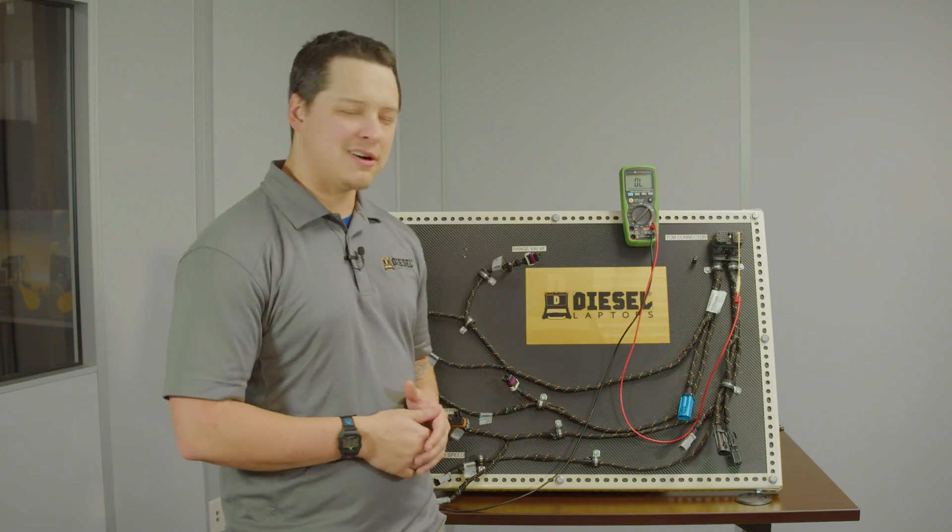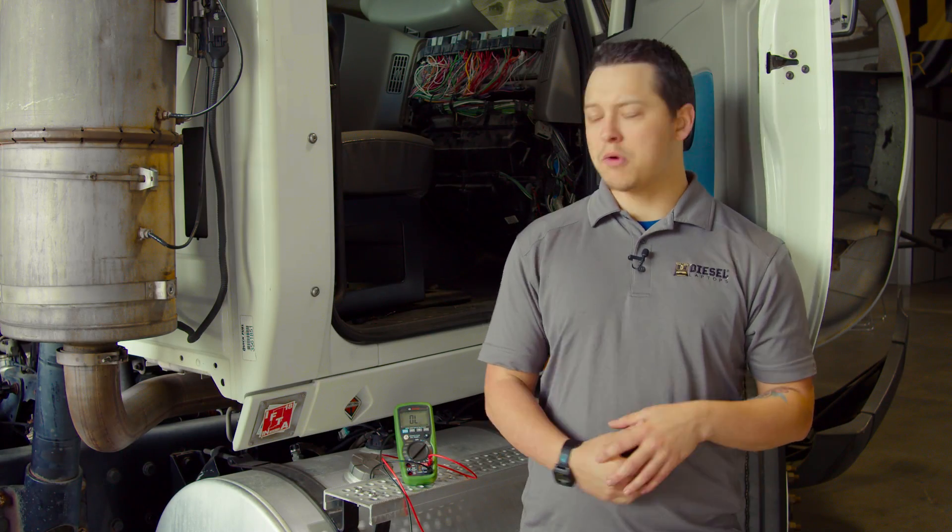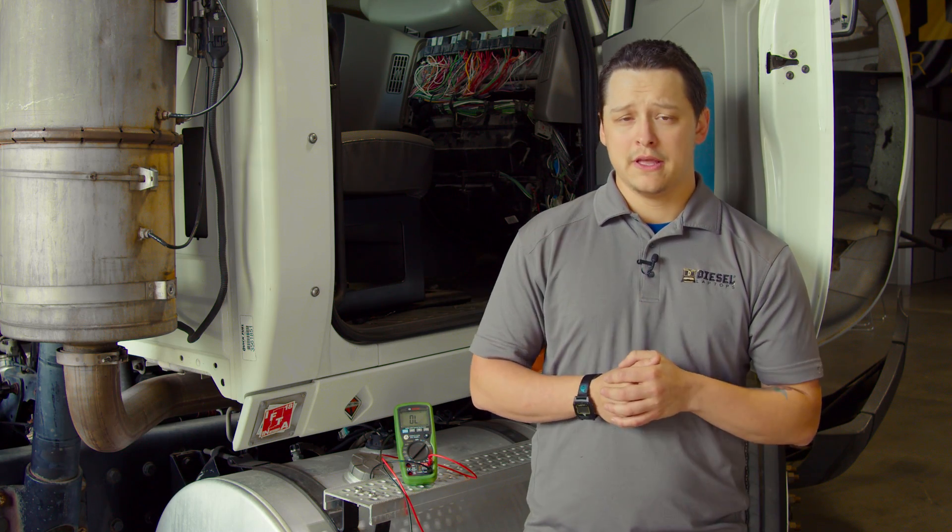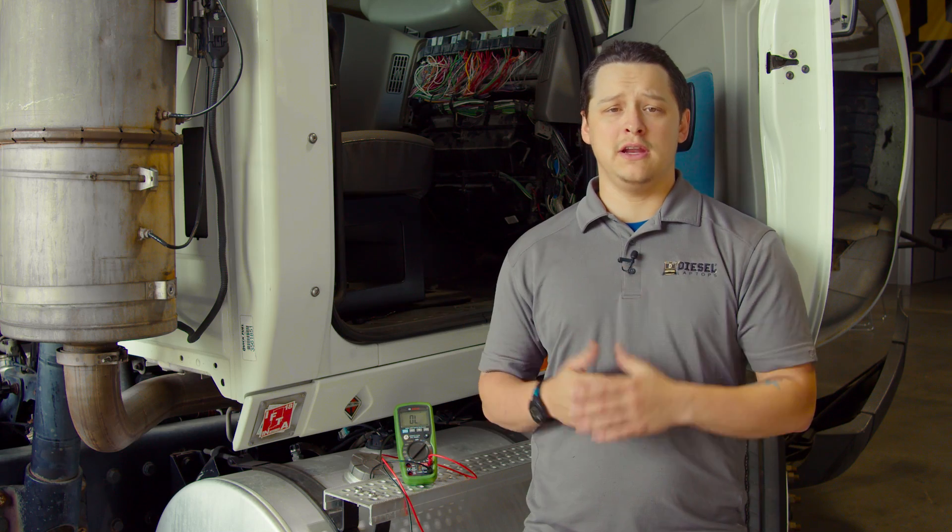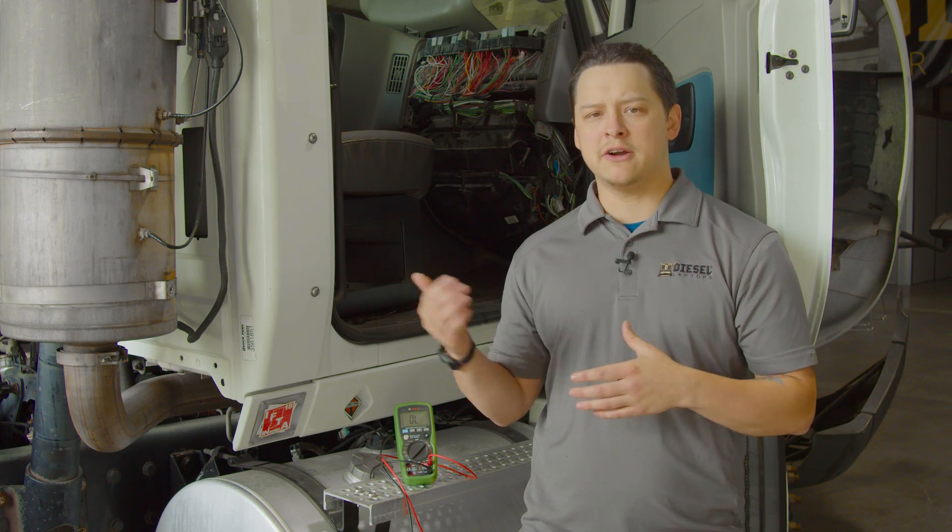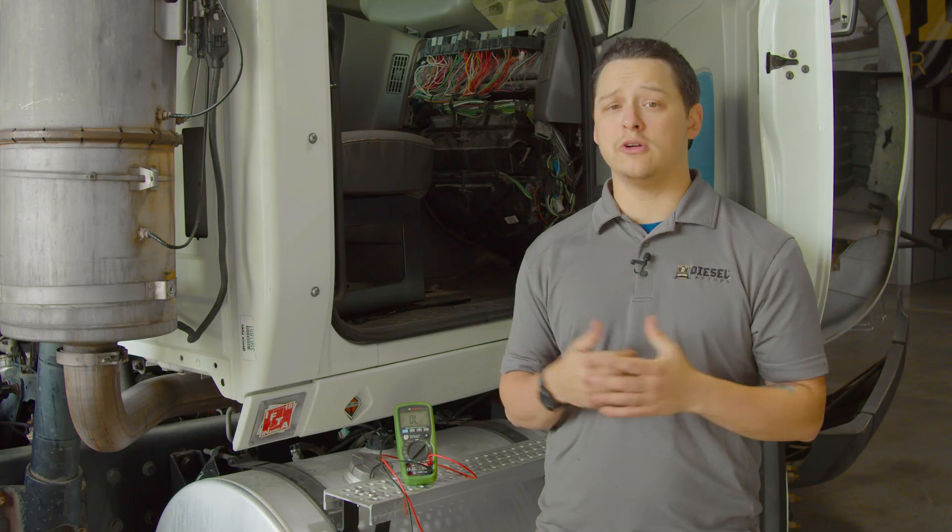Alright so now that we've covered what a continuity test is and how to perform it, let's go ahead and take you guys into a real world application. We've got a truck in the shop so I'll grab my meter, my test lead kit, and I'll see you out in the shop. So now that we're out here on the truck, what we're going to do today is test continuity of our wheel speed sensor circuit. Now before taking any resistance measurements or performing continuity test, be sure that there is no voltage running through the circuit that you're going to be testing on. We already have the batteries disconnected and our connector is already unplugged from the module so we are all set to perform this test.